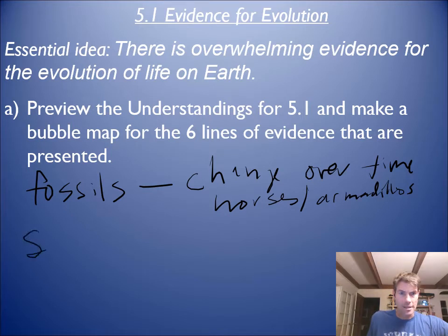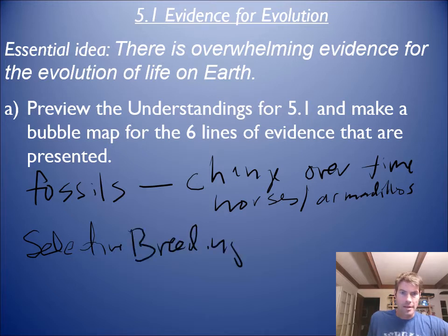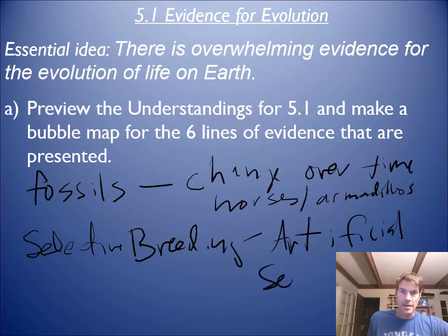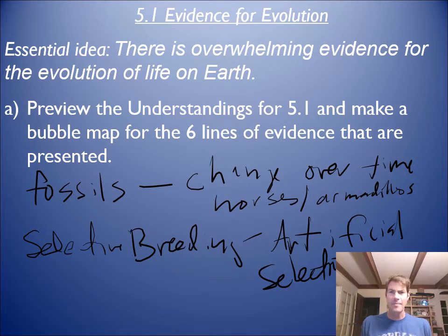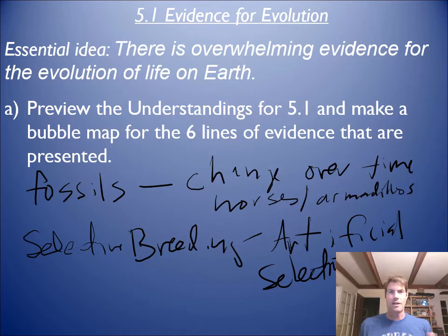Another line of evidence is selective breeding, also known as artificial selection. That is when humans breed animals together — making sure certain chickens breed together, certain dogs breed together, certain plants breed together — and we can change them in a short amount of time. We can see change happen over five, ten, a hundred years. Think if you had a hundred million years, how much change you could see.